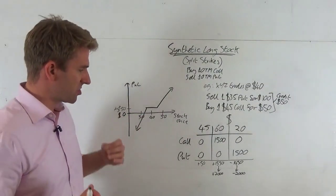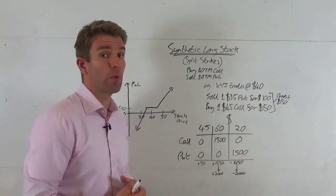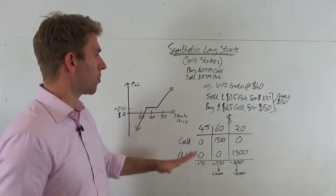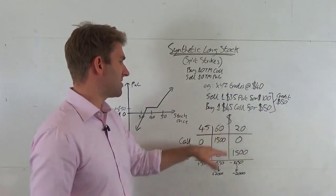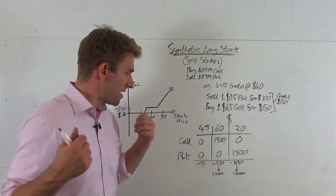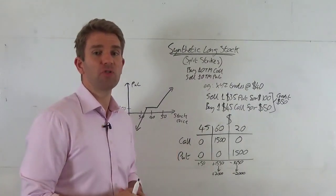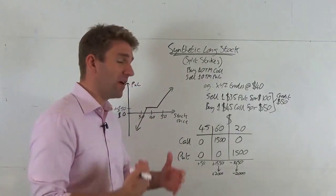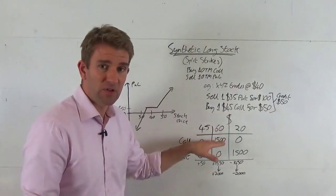What happens at 60? So the stock rallies to 60 dollars, we're right, we're correct. How has this synthetic long stock with a split strike position worked in our favor? The call option is the one that's going to be worth the most, right, because we've bought this 45 call, right to 60, that's going to have 15 dollars worth of value, which is 1500 dollars worth of value because 15 times by that 100 shares is 1500 worth of value.